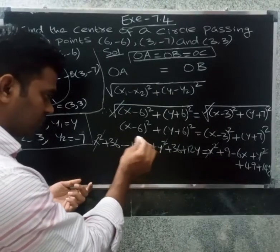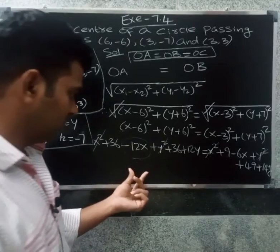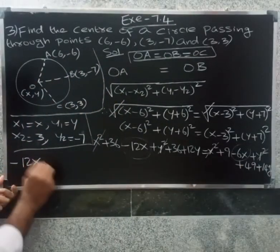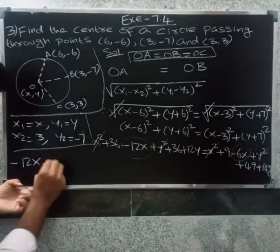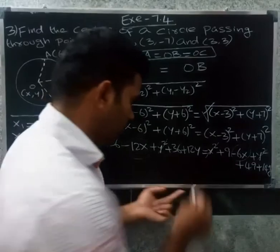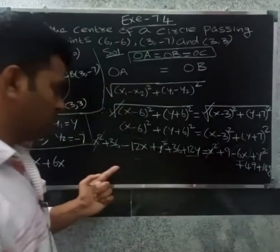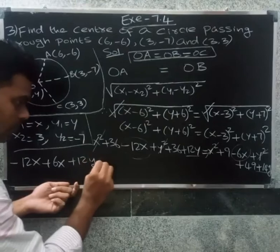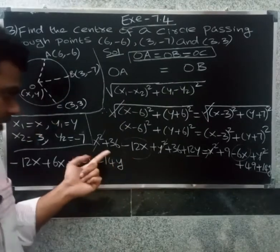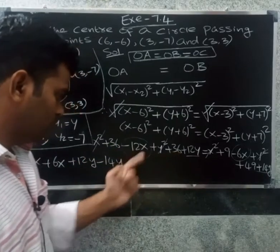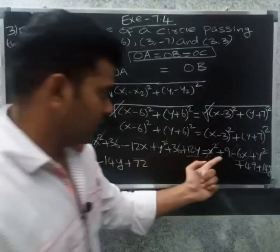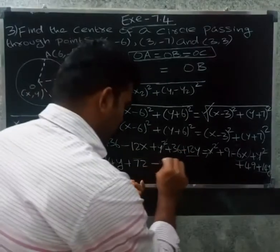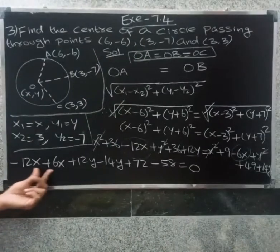After canceling x square and y square terms, we collect the x terms: minus 12x on the left, minus 6x on the right gives minus 6x. The y terms: plus 12y minus 14y gives minus 2y. Constants: 36 plus 36 is 72 on the left; 9 plus 49 is 58 on the right. So minus 58, giving minus 58 equal to 0.